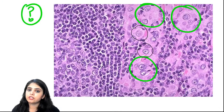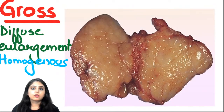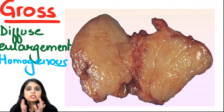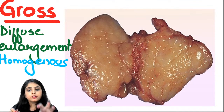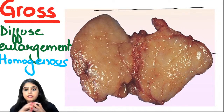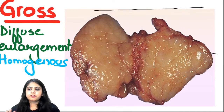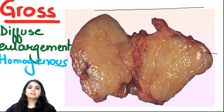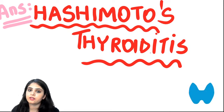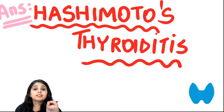On gross appearance, Hashimoto's thyroiditis shows diffuse enlargement of the entire thyroid gland - not a solitary nodule. The enlargement is homogeneous, all looking the same color throughout. That is the classical gross appearance of Hashimoto's thyroiditis.